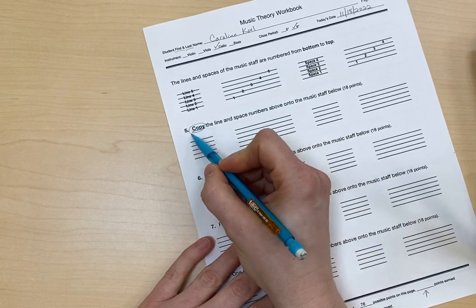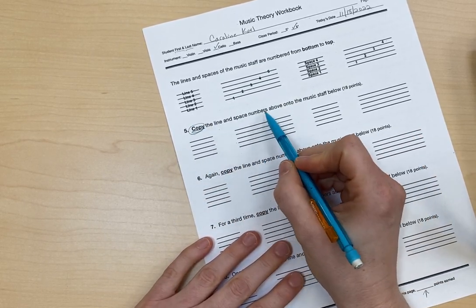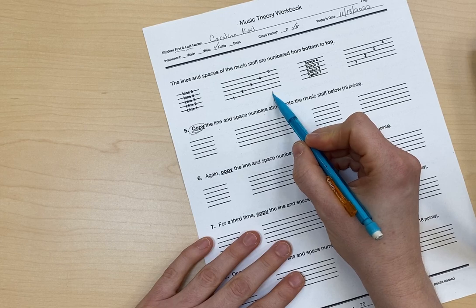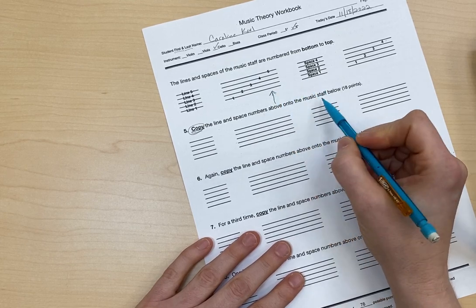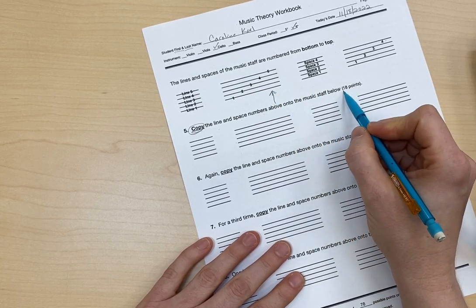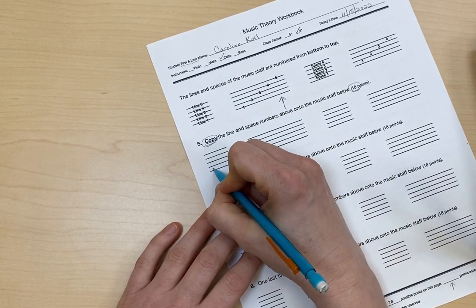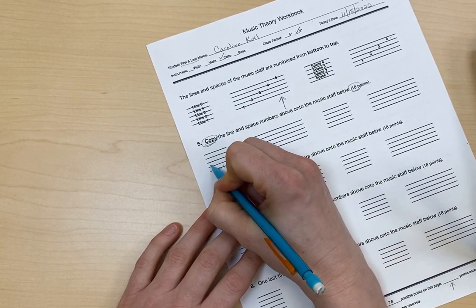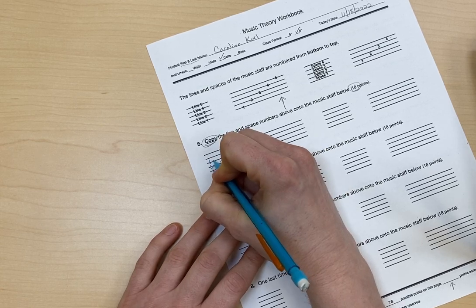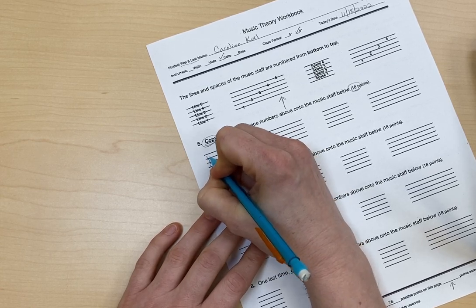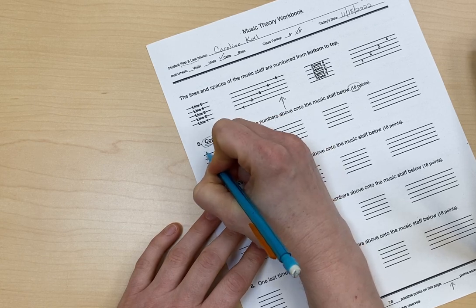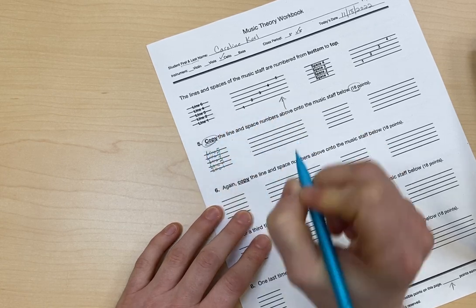So now we're going to copy the line and space numbers above, so this, onto the music staff below. And this is worth 18 points. So over here, I'm going to do line one, line two, line three, line four, line five.